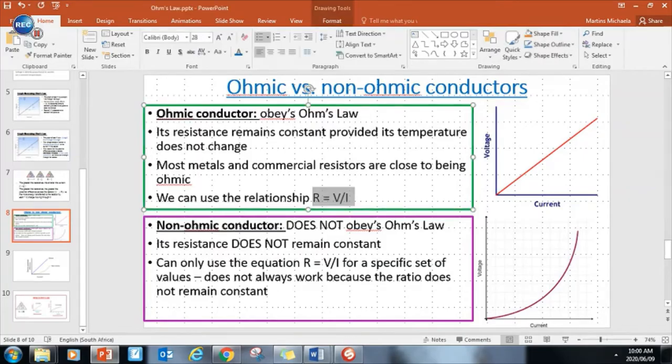Now non-Ohmic does not obey Ohm's law. Look at this voltage and current graph. You do not see a straight line that goes through the origin. You see a kind of a curved line. So that means that the resistance is not constant. If I go voltage divided by current, I'm going to get different resistance values as I go along. So it'll only work, this equation will only work for specific values, for specific sets of values, but it doesn't always work. The ratio doesn't always remain constant. Therefore resistance is not always constant.